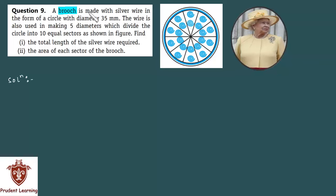A brooch is made with silver wire in the form of a circle with diameter 35 mm. The wire is also used in making five diameters which divide the circle into 10 equal sectors as shown in figure.